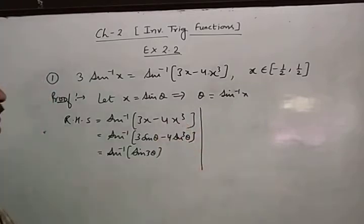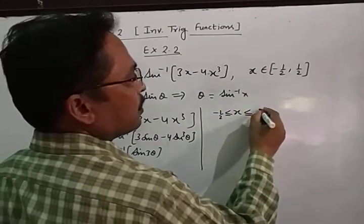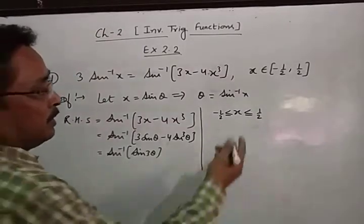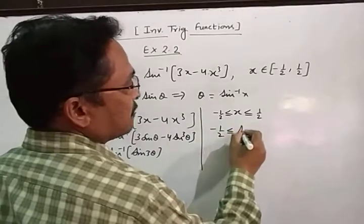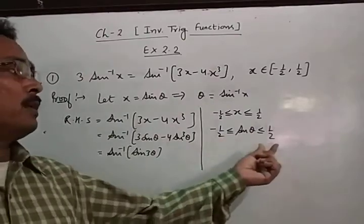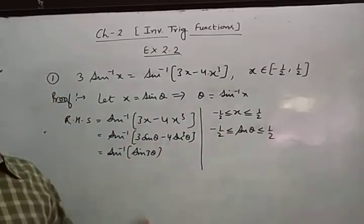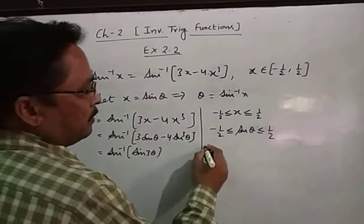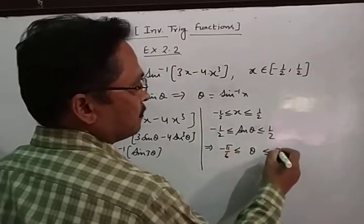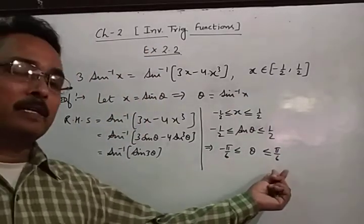Now look here. Since x lies between −1/2 and +1/2, including the endpoints, this implies sinθ lies between −1/2 and +1/2. This further implies θ lies between −1/2 and +1/2.